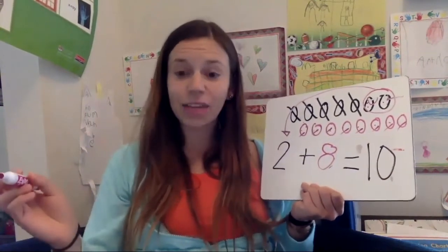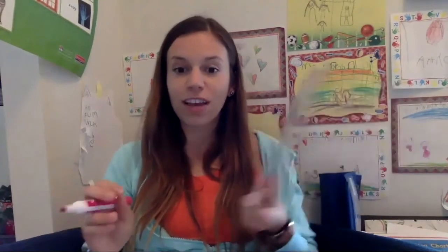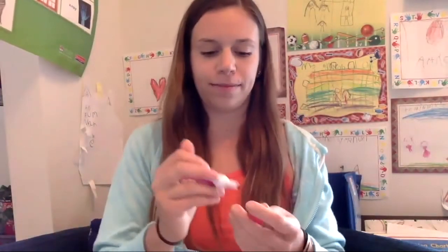Two plus eight equals ten. We can double check that with our fingers. We have two, but we want to get to ten fingers. How many more fingers do we need to put up? One, two, three, four, five, six, seven, eight. We had two, we put up eight more fingers, and now we have ten: one, two, three, four, five, six, seven, eight, nine, ten.